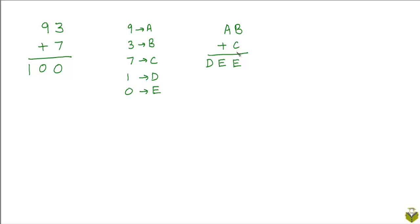One of the solutions to this problem is of course that A is 9, B is 3, C is 7, D is 1, and E is 0.